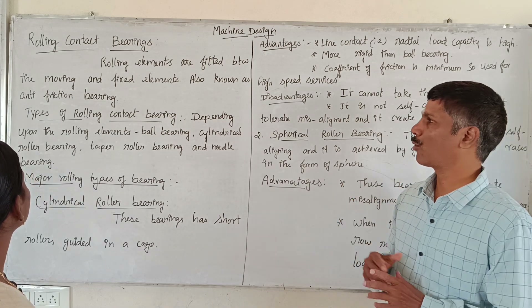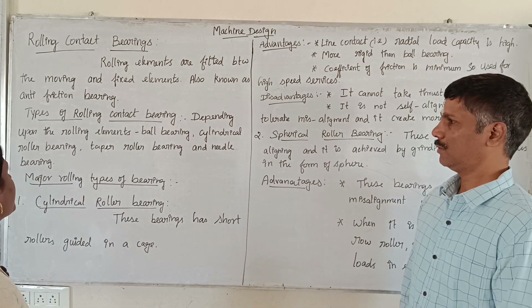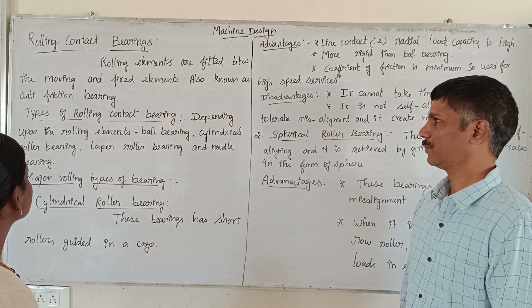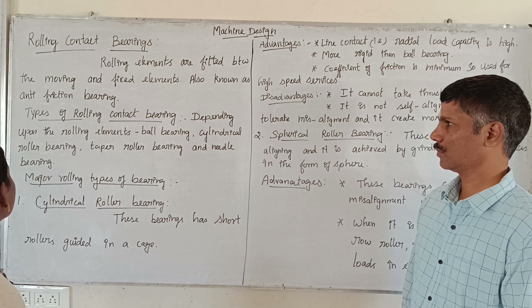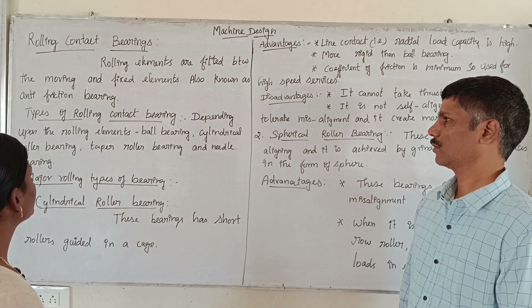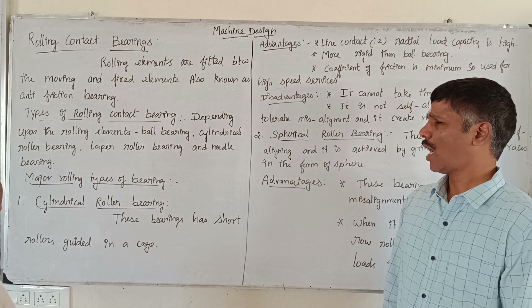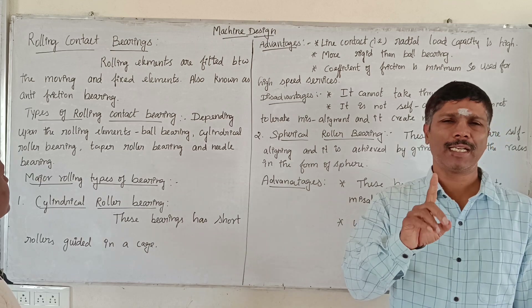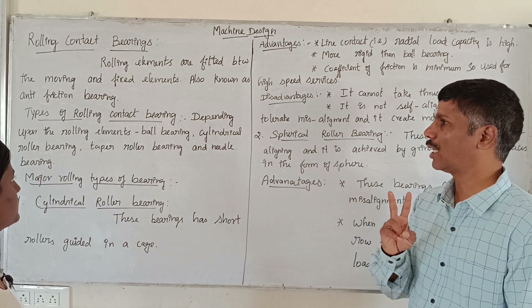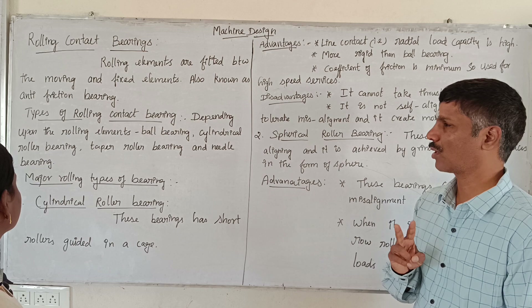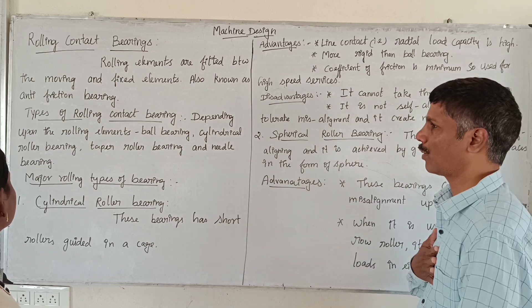Types of rolling contact bearing depend upon the rolling elements. Number one: ball bearing. Number two: cylindrical roller bearing. Number three: tapper roller bearing. Number four: needle roller bearing. So, four types in total.